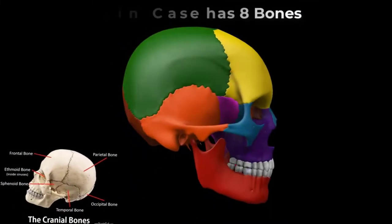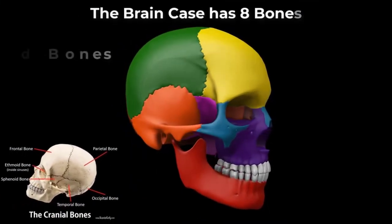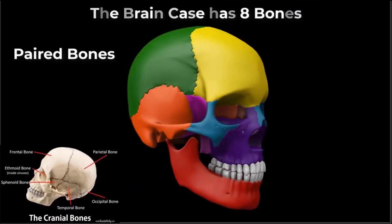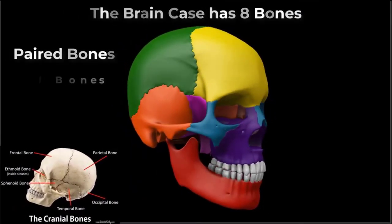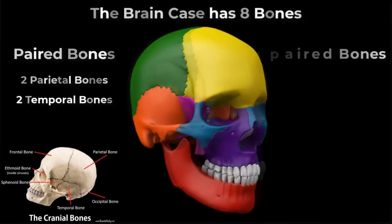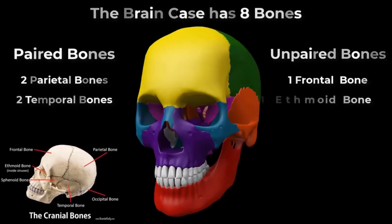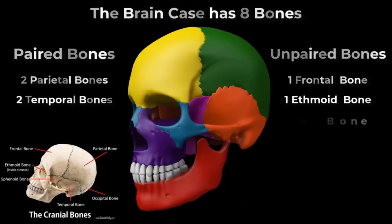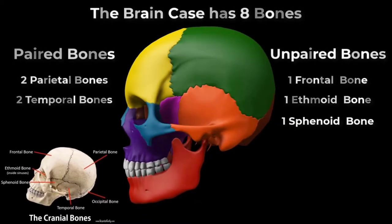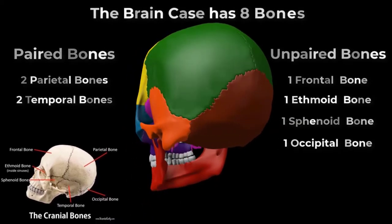The brain case consists of 8 bones. These include the paired parietal and temporal bones, plus the unpaired frontal, ethmoid, sphenoid, and occipital bones.